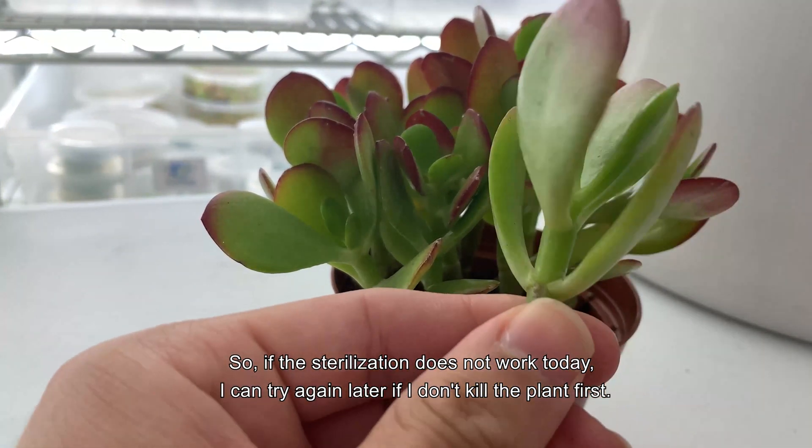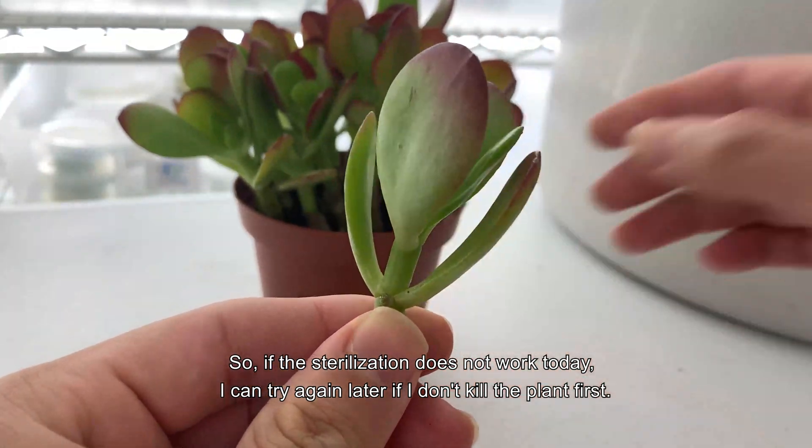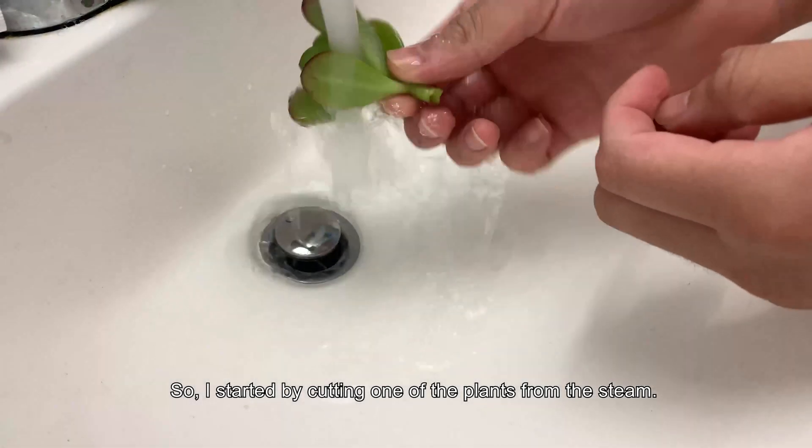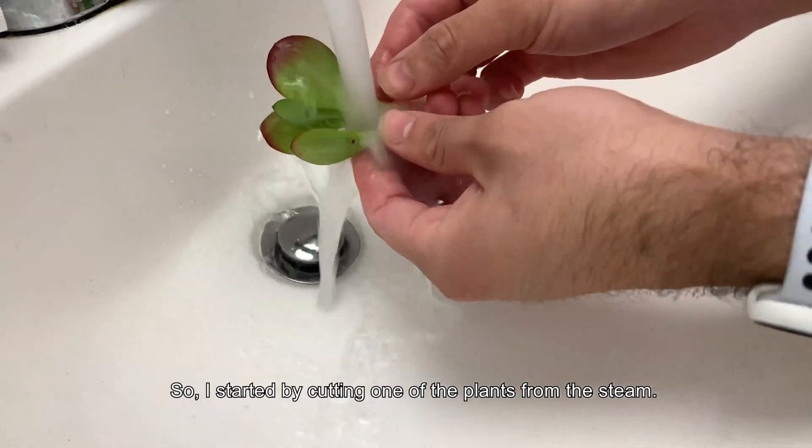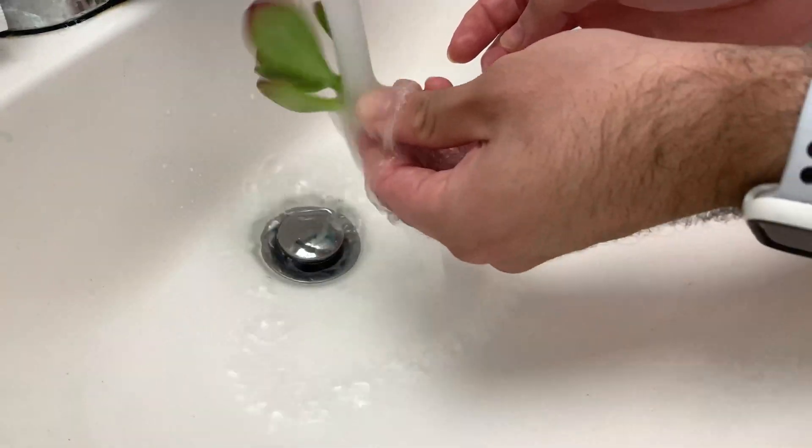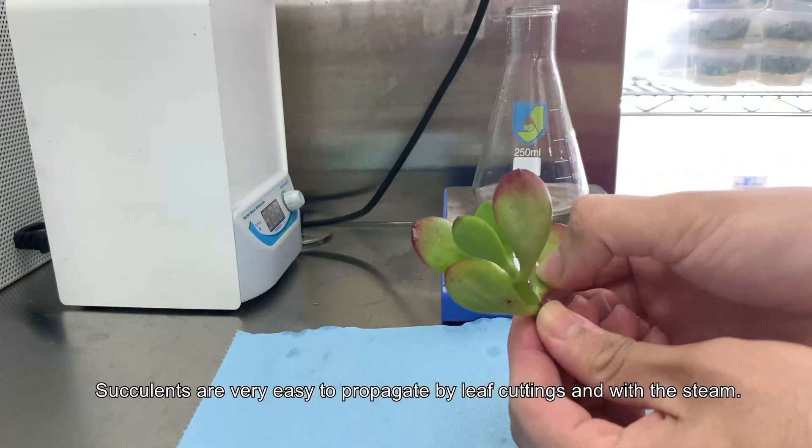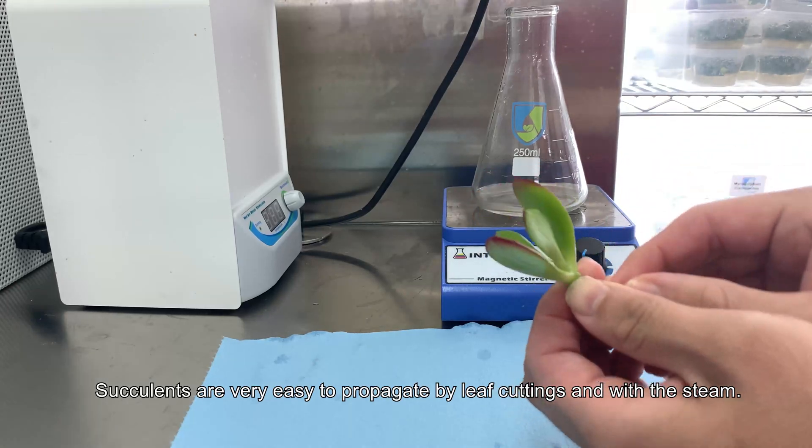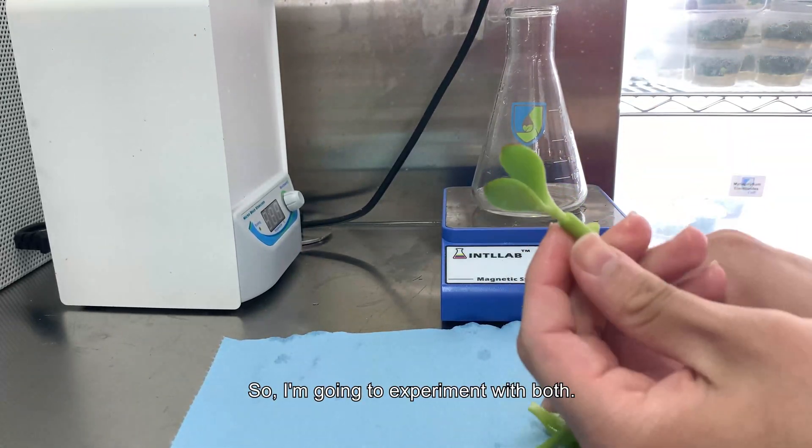If I don't kill the plant first. So I started by cutting one of the plants from the stem, take the explant to the sink, and clean all the dirt from the plant. Succulents are very easy to propagate by leaf cuttings and with the stem, so I'm going to experiment with both.